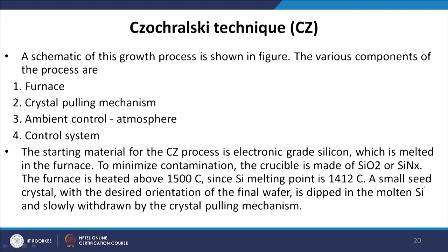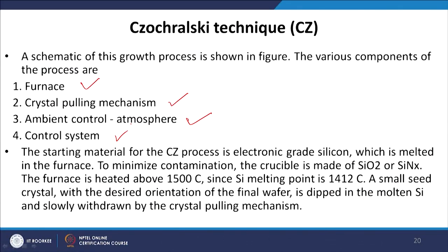In the Czochralski technique, the growth process involves several components: a furnace, a crystal pulling mechanism, an ambient atmosphere control, and a control system. The starting material is electronic grade silicon (polycrystalline), which is melted in the furnace. To minimize contamination, the crucible is made of silicon dioxide (SiO₂) or SiNx, so the silicon remains in a silicon-only environment. The furnace is heated above 1500°C, since silicon's melting point is 1412°C.